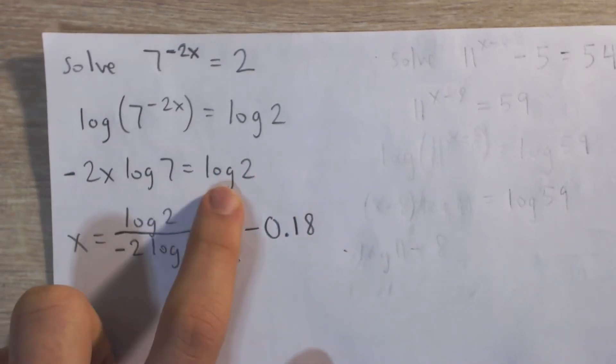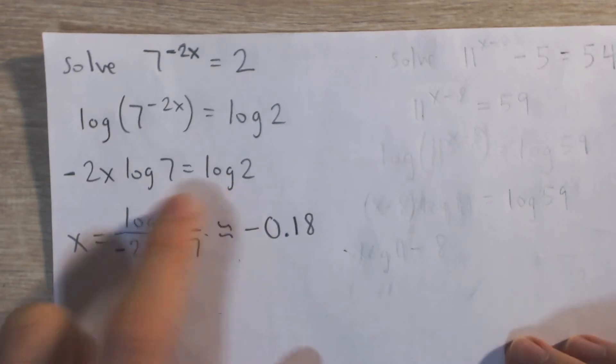But remember, logs are just numbers. Log 7 is just a number, log 2 is just a number. And so to solve for x,